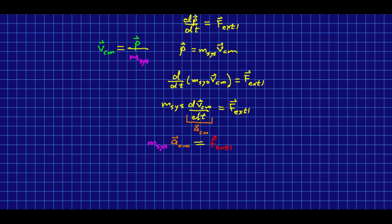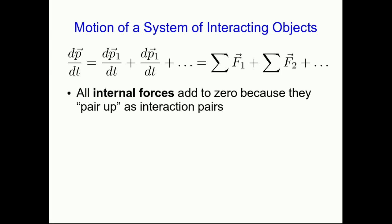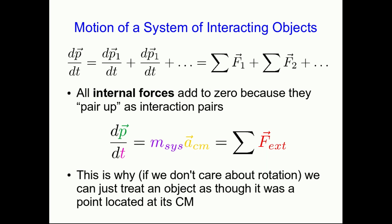And this is a claim I made much earlier, which was that no matter where forces act on the system, they have the same effect on the acceleration of the center of mass of the system. The same argument that works for two objects and a single external force works for any number of objects with any number of external forces. We simply take the time derivative of the momentum, that gives us a sum of sums of forces. Because all the internal forces pair up as interaction pairs, they're guaranteed to add up to zero. And so we end up with simply the sum of the external forces. And this is why, as long as we don't care about rotation, we can always treat any object as though it was a point located at its center of mass.